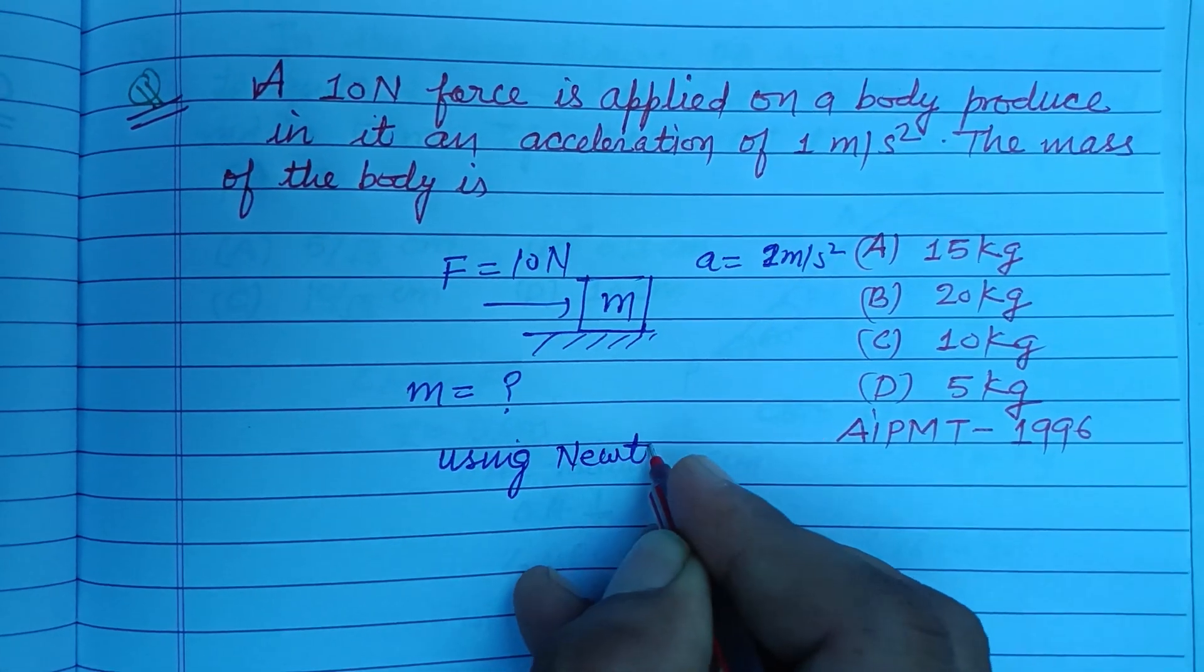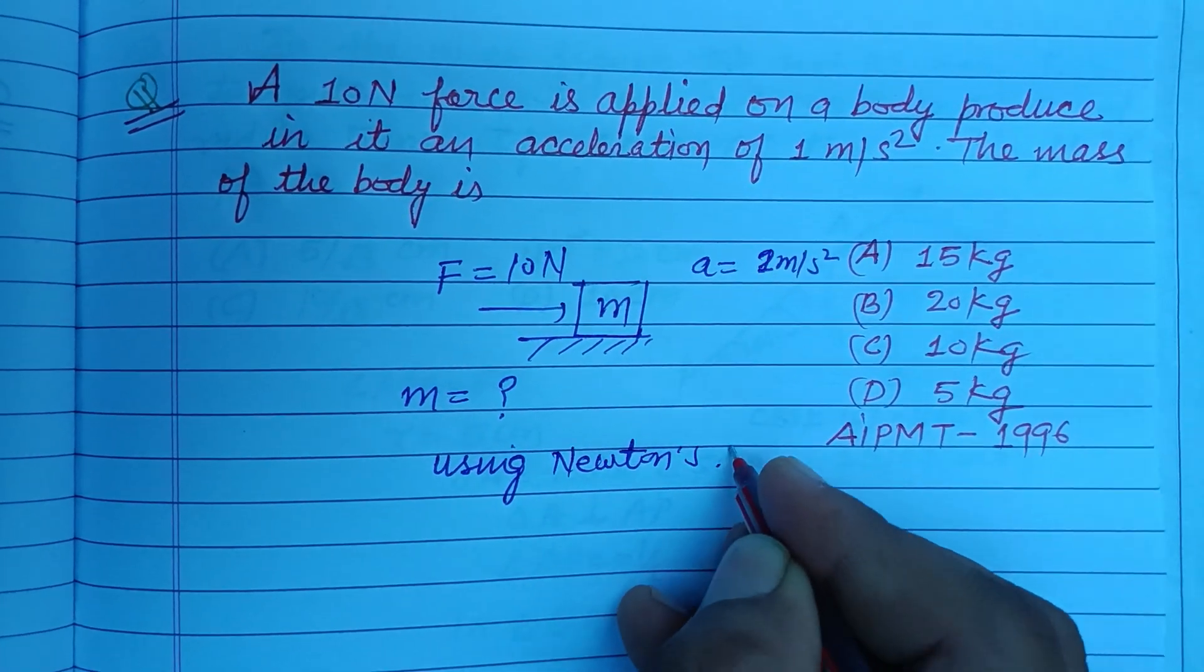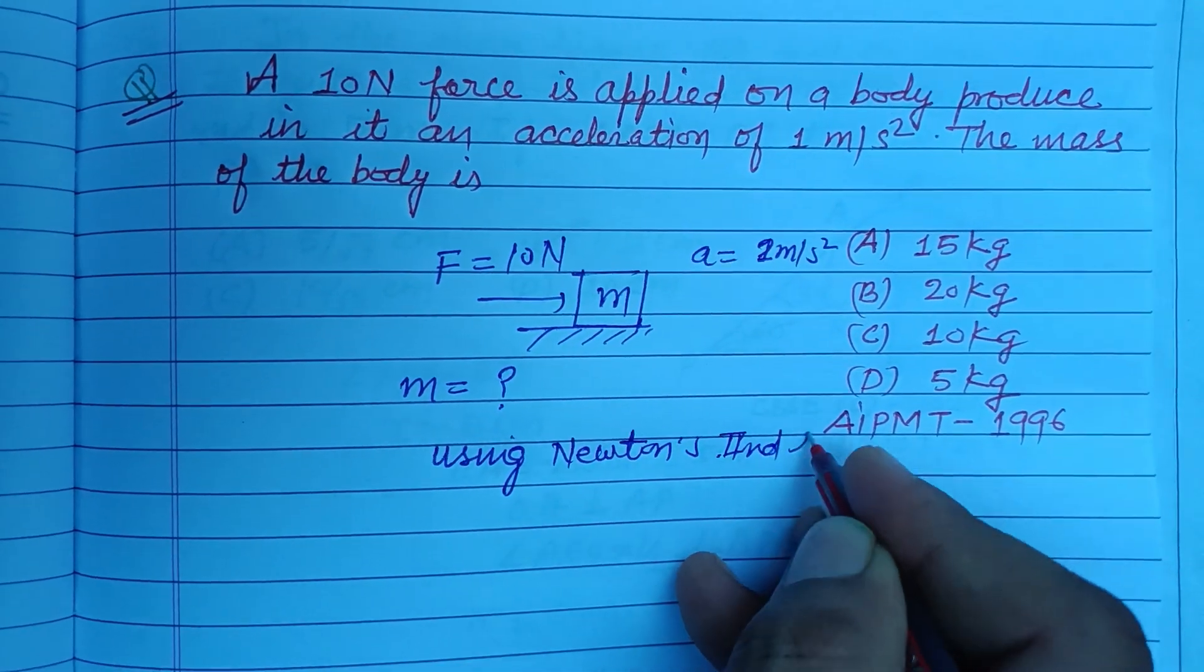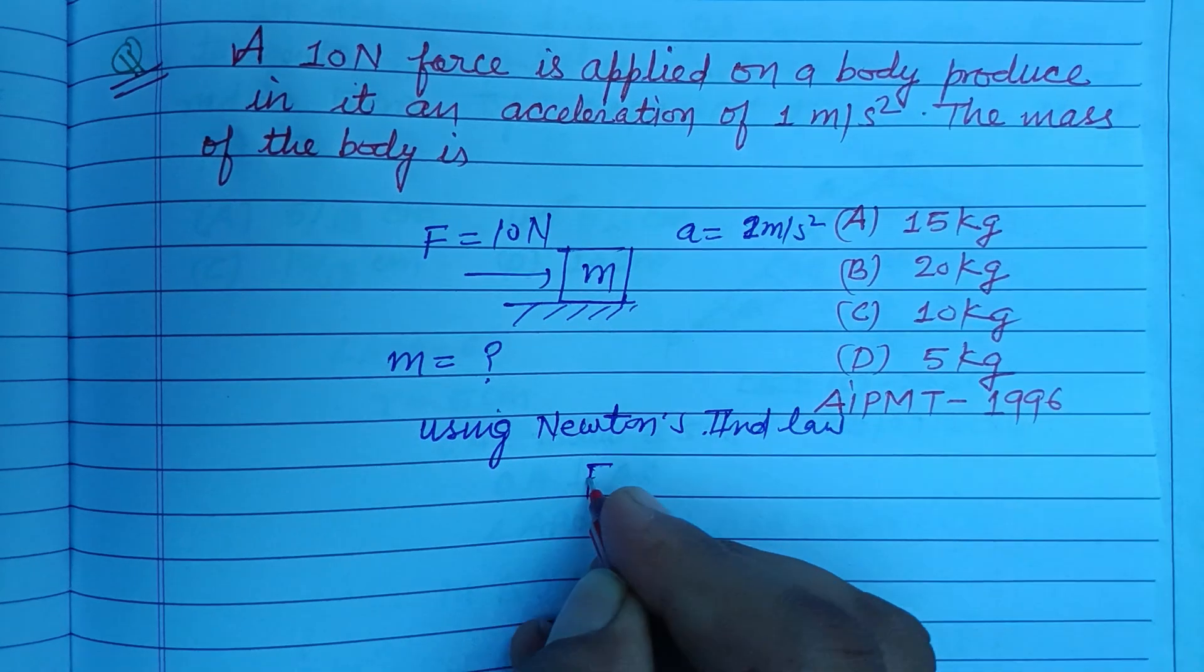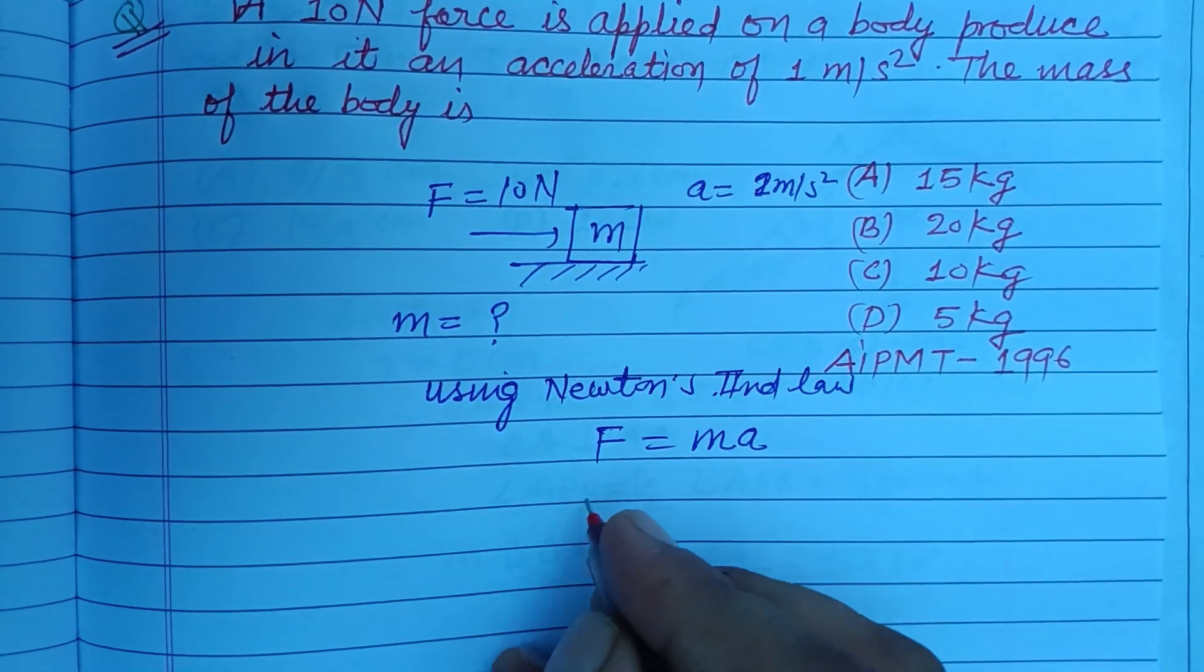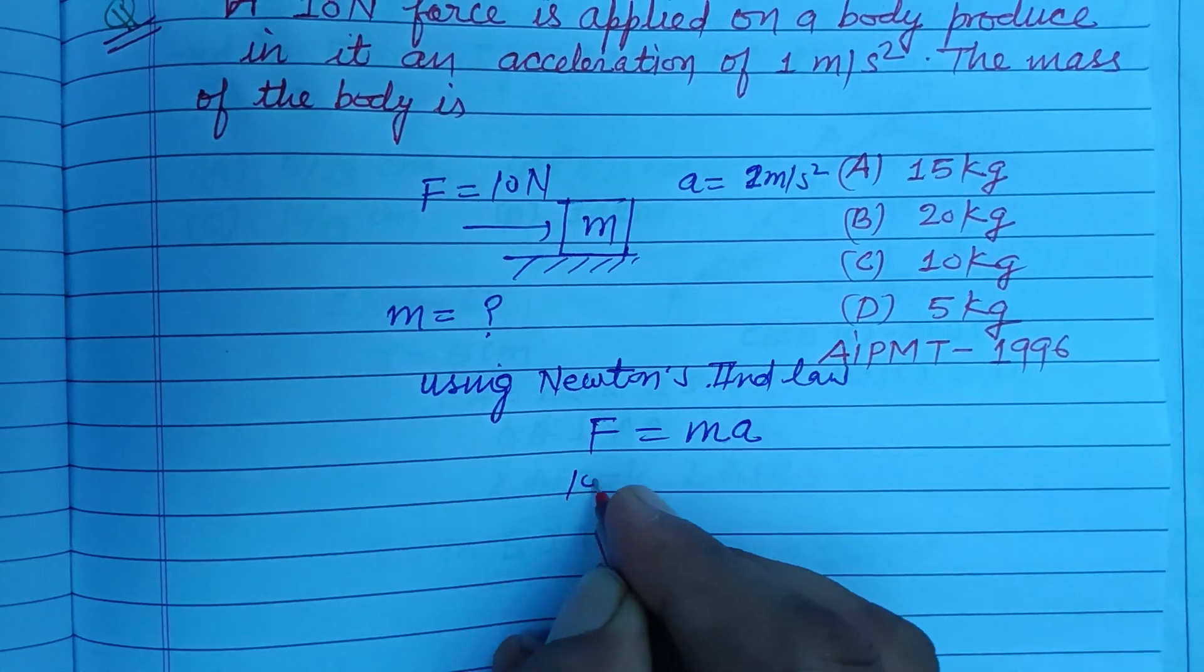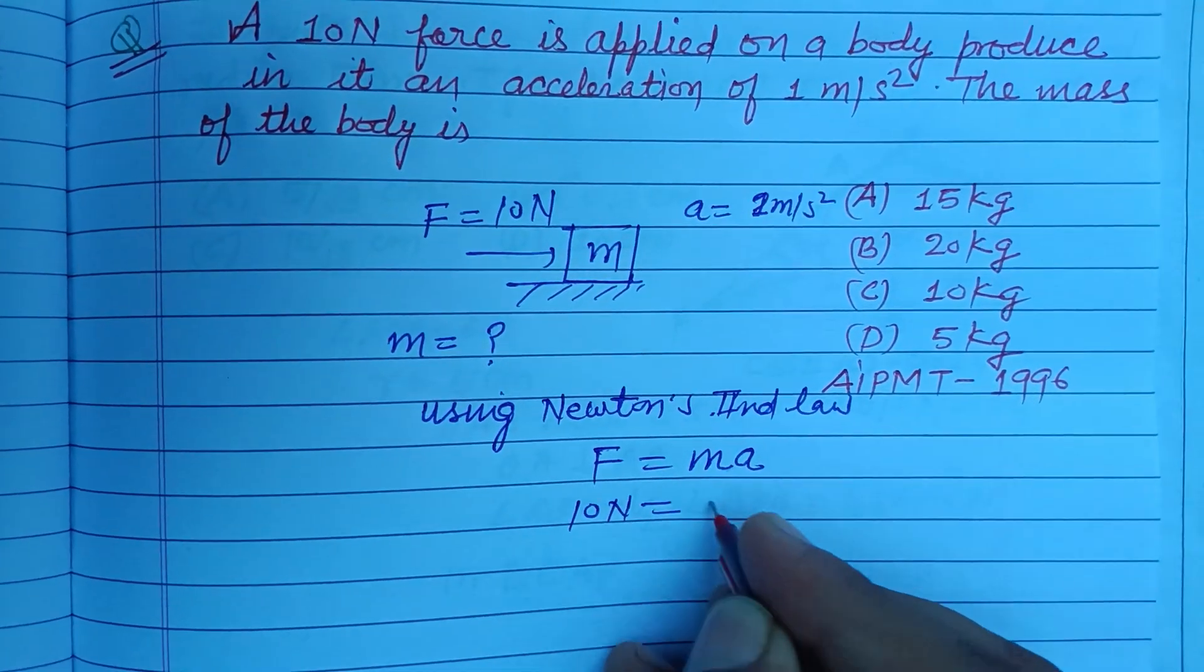Newton's second law states F equals mass times acceleration. F is given to us as 10 newtons, mass is required, and acceleration is 1 meter per second squared.